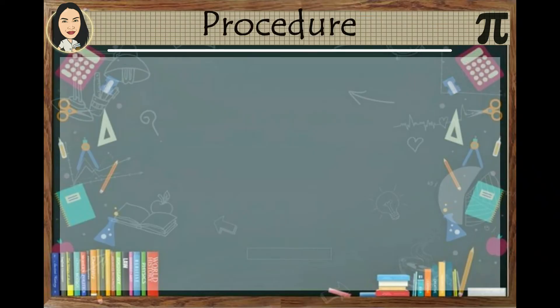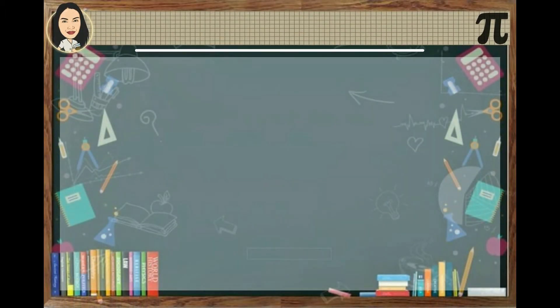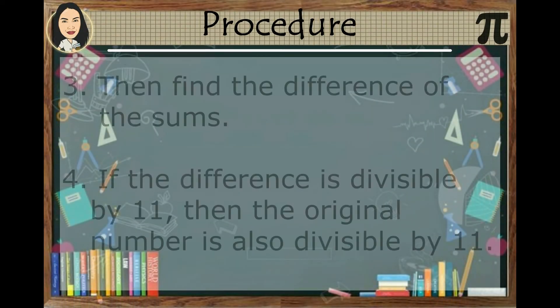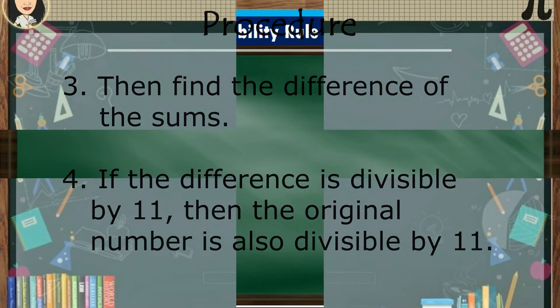Here's how to test divisibility by 11. Step 1: Group the alternate digits — digits in odd places together, and digits in even places together. Step 2: Take the sum of the digits of each group. Step 3: Find the difference of the sums. Finally, if the difference is divisible by 11, then the original number is also divisible by 11.